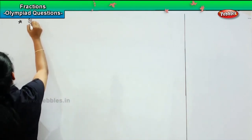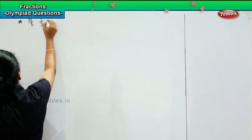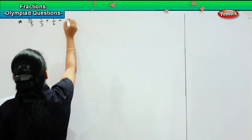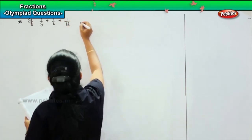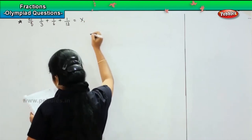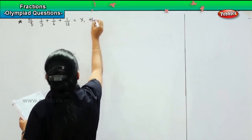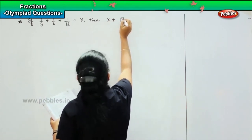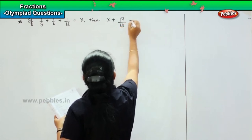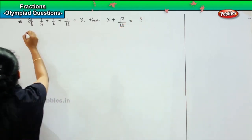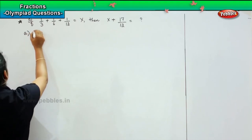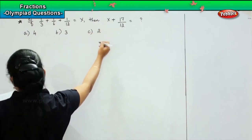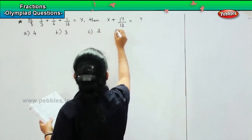If 1/3 plus 1/6 plus 1/12 equals x, then what is x plus 17/12? The options given are: option A - 4, option B - 3, option C - 2, and option D - 1.